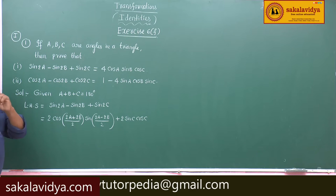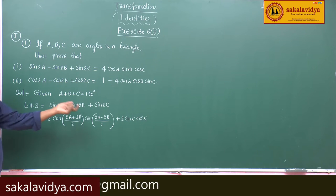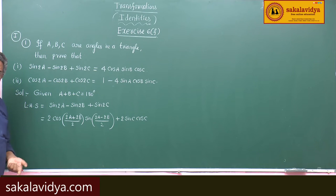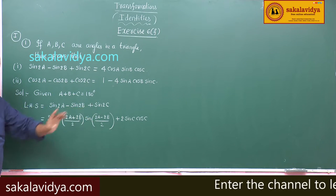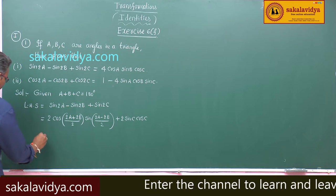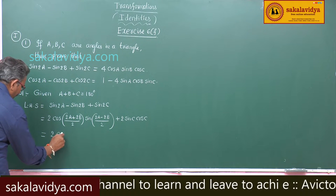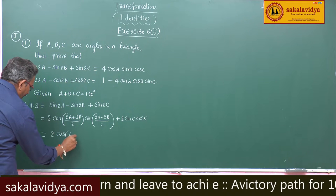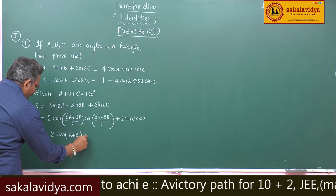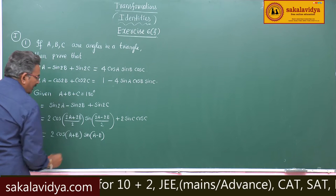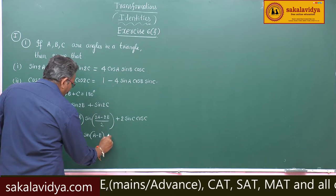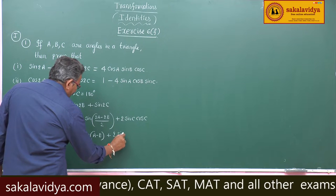Sin 2 theta is only one formula that is 2 sin theta cos theta. We have sin 2C is equal to 2 sin C cos C. Now, this can be written 2 cos of A plus B and sin of A minus B plus 2 sin C cos C.